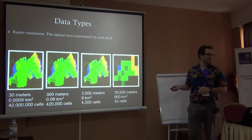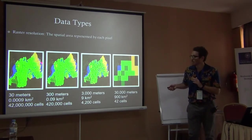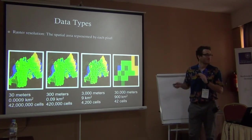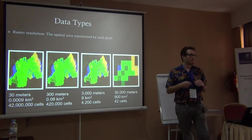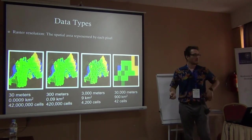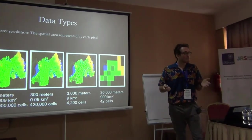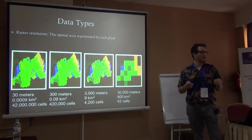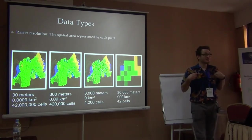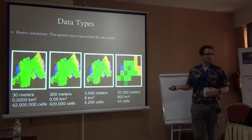Clearly for Rwanda we'd want the highest resolution possible because it gives the most detailed information. But what's the biggest problem with high resolution? The obvious answer is that you need very sensitive sensors to capture that detail. But practically for analysis, higher resolution means more cells to process — 42 million cells at 30m versus only 42 cells at a coarser resolution. The computer can do it, but it takes much longer.